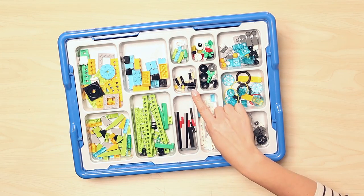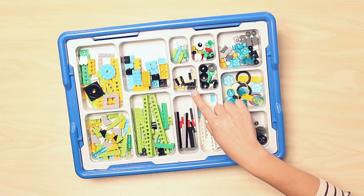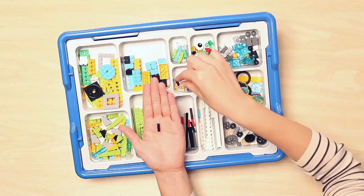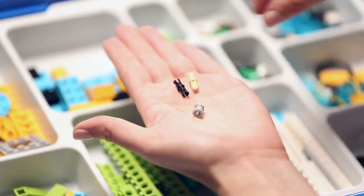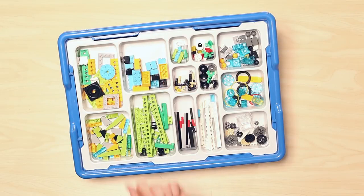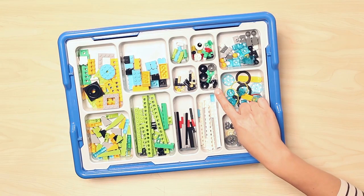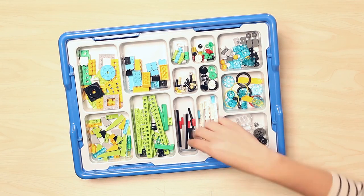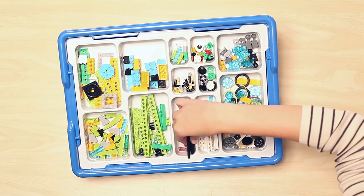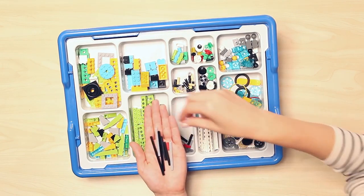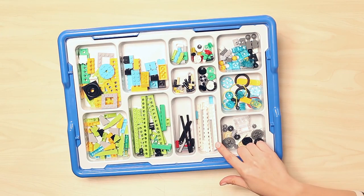Moving below again, you have a small compartment that houses axle and beam connector pegs as well as bushings. Beside that is a collection of round plates, all in different colors for easy identification. Moving below again to the first long skinny compartment, you will find all the axles in the set in a variety of lengths.